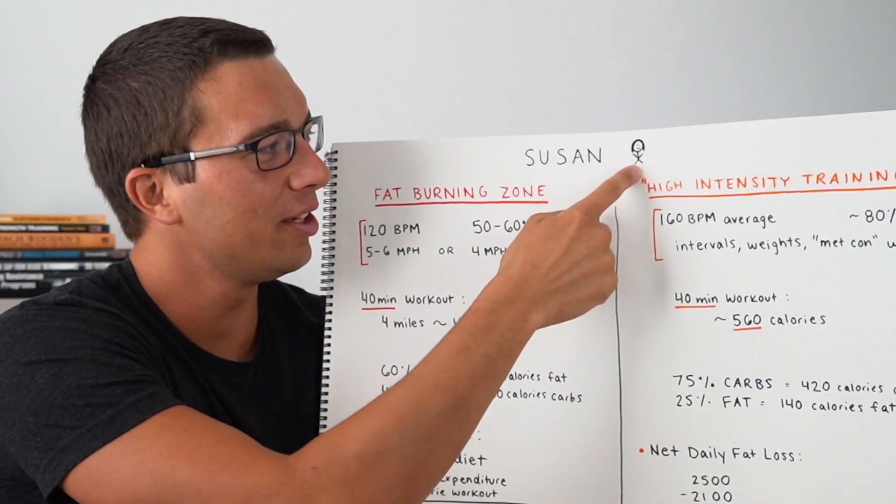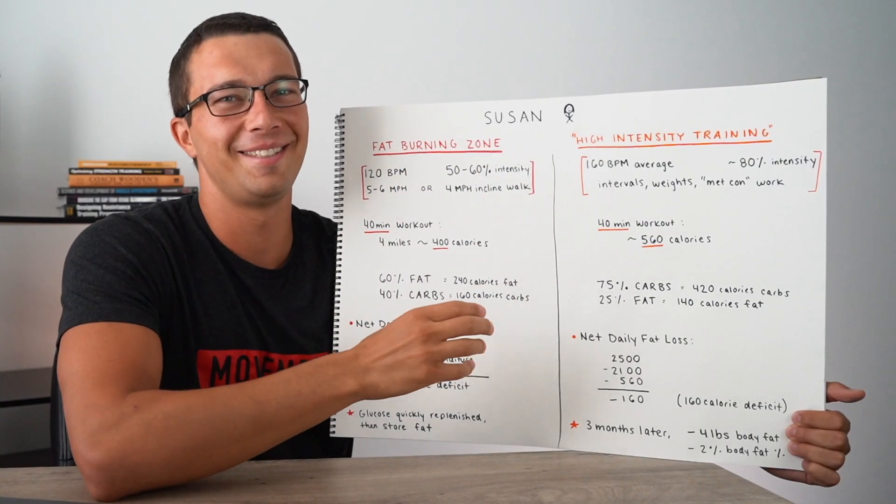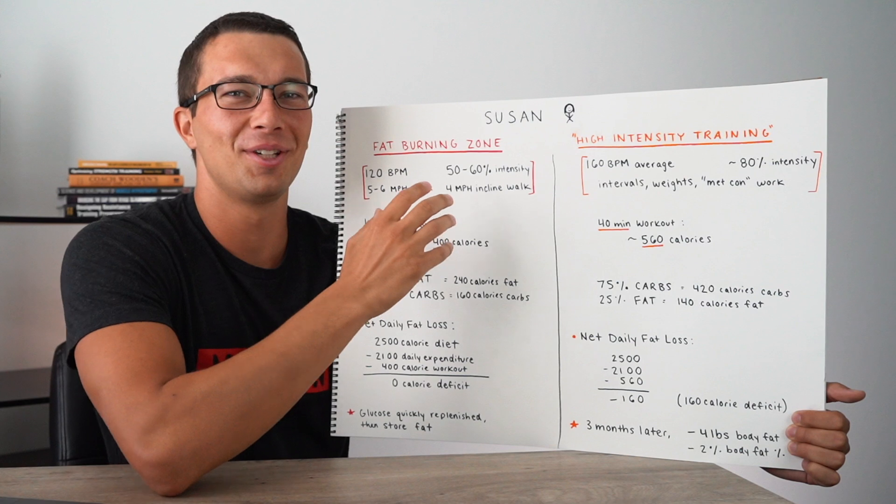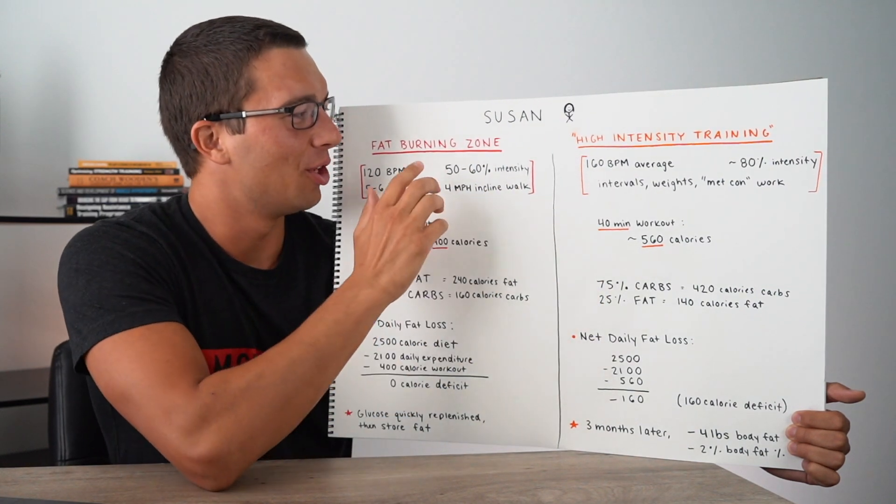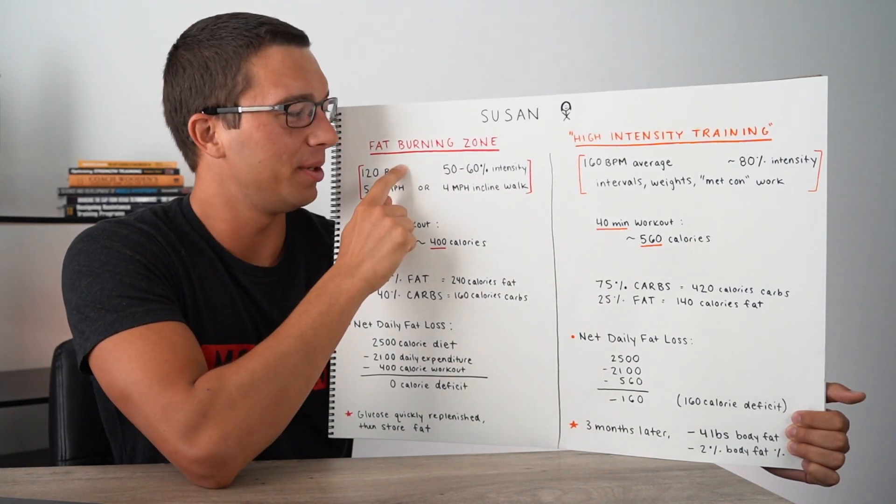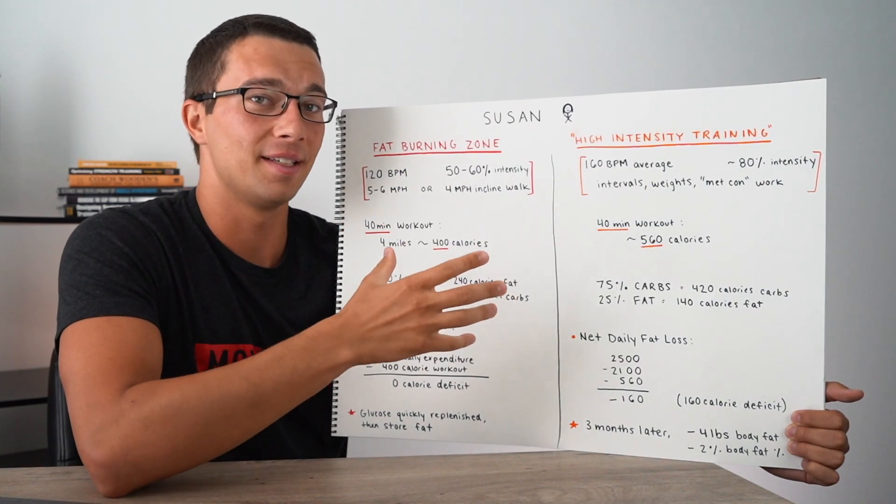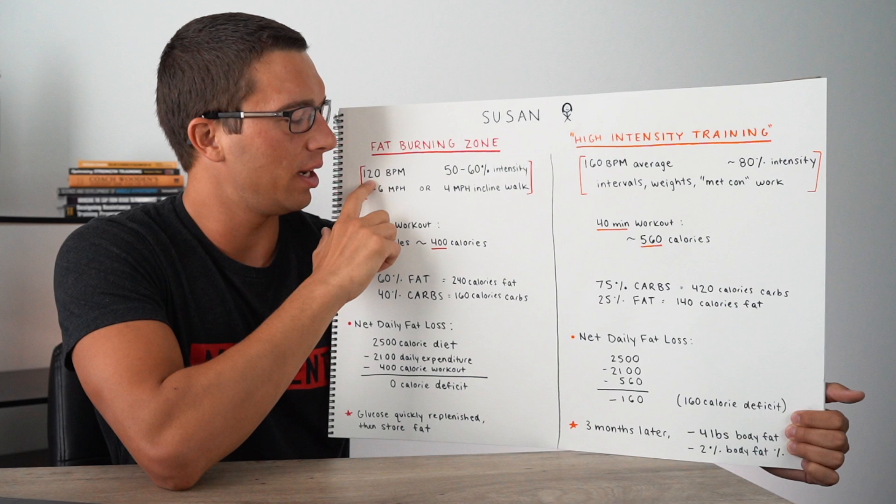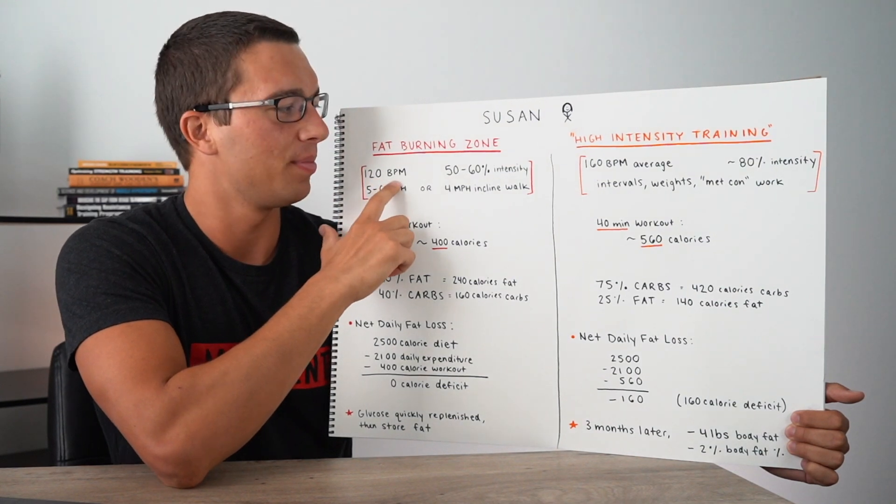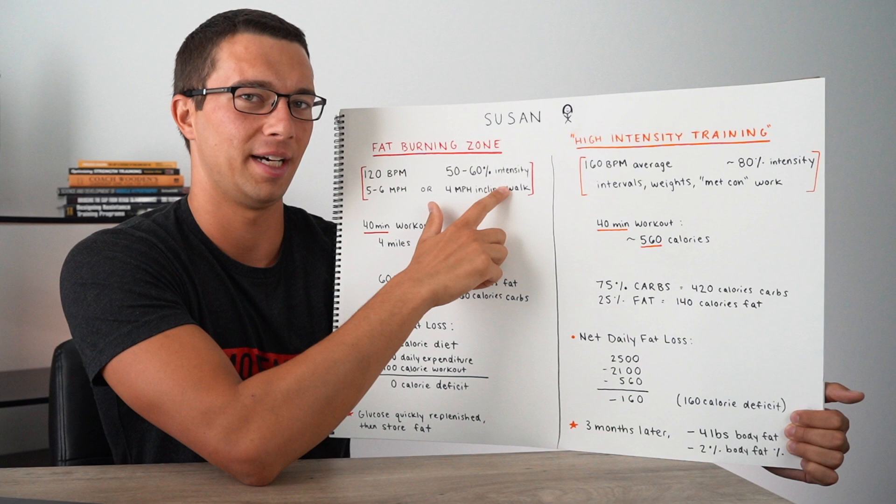All right, so this is Susan. She's already looking pretty thin, but let's just say that she wants to lose some body fat, and she's gonna take one of these two approaches. So option number one, we're gonna be over here in the fat burning zone. So based on the graphs and what the idea is of the fat burning zone, this is gonna be somewhere around 120 beats per minute, or around a 50 to 60% intensity of exercise.